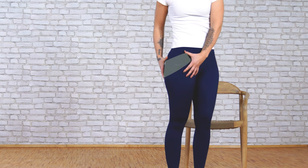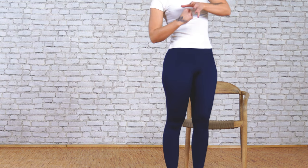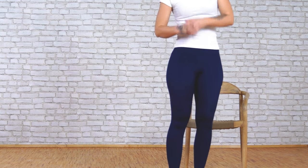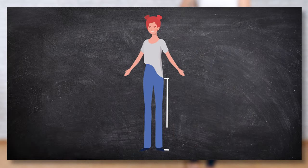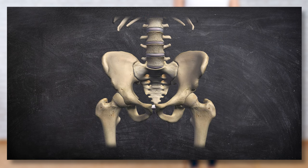The topic today is leg length difference. In this video I explain where this comes from and how you can solve the whole thing. My name is Hannah, I am a trained Liebscher & Bracht therapist. So how can leg length discrepancy happen? By too much tension in the tissues around the hip.